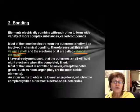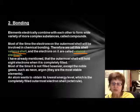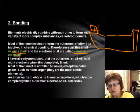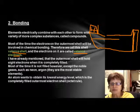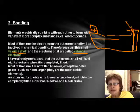The outermost electron shell can hold a maximum of eight electrons, but most elements do not have that many. The only ones that already have eight electrons are in the last column of the periodic table — the noble gases.